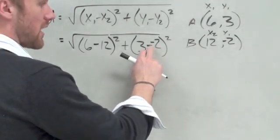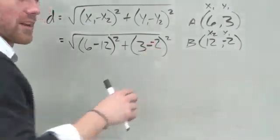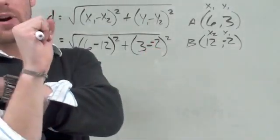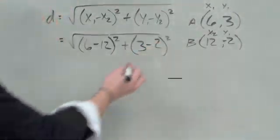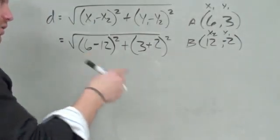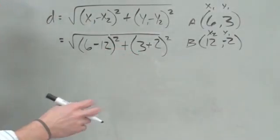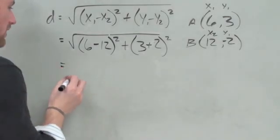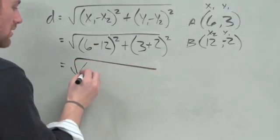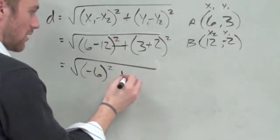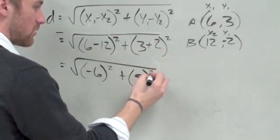First of all, what do we know 3 minus negative 2 is? Good job! When you minus a negative, it turns into a positive. Two negatives make a positive. Two wrongs make a right in math. So we keep going. 6 minus 12 is -6, still squared, plus 3 plus 2 is 5, squared.